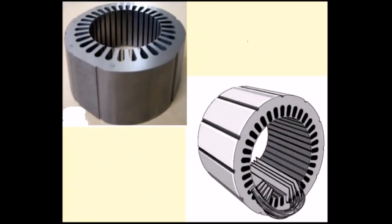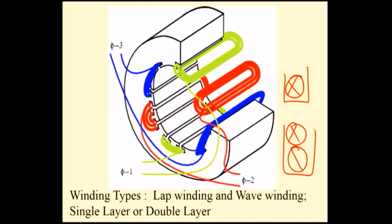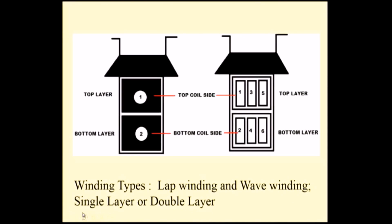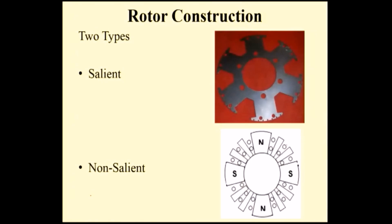The stator is not made of a single solid metal — it is made up of a number of stampings. The thickness of the stack is the core length, which is a design parameter. All the stampings are arranged according to the required core length, and though it looks like a solid piece, it is not. The inner periphery has a number of slots containing the armature winding. The winding may be single-layer winding — with only one layer per slot — or double-layer winding, with a lower layer and an upper layer. Three-phase winding is placed in this manner.